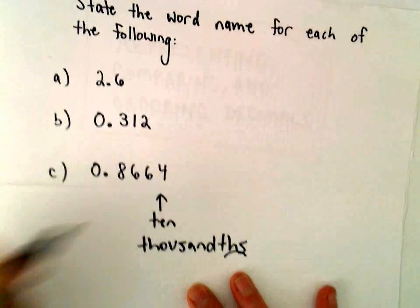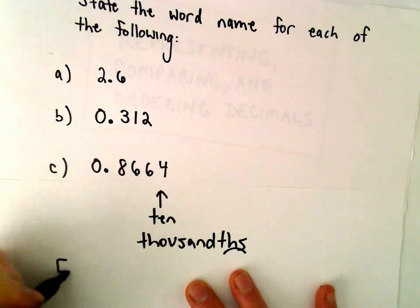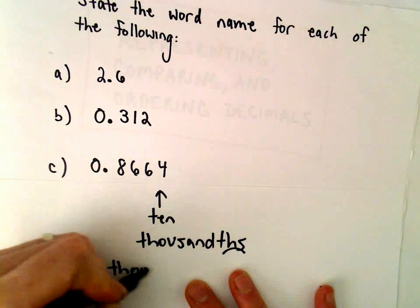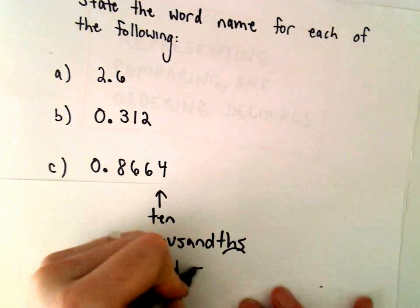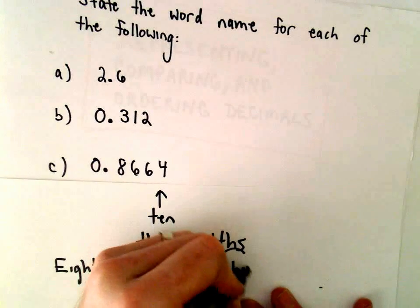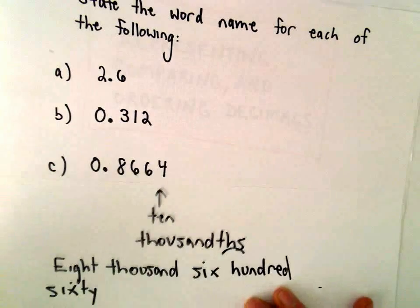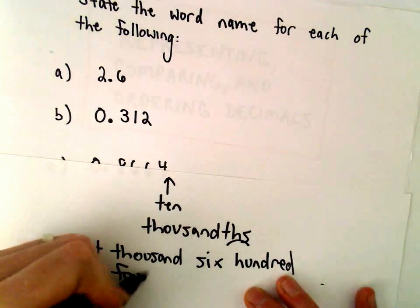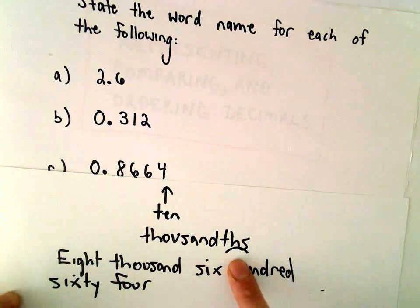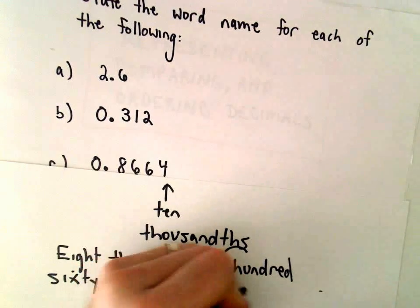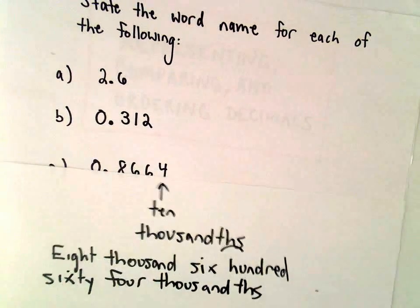Okay, so in this case, it looks like we have 8,664. And now we just tack on our place value.